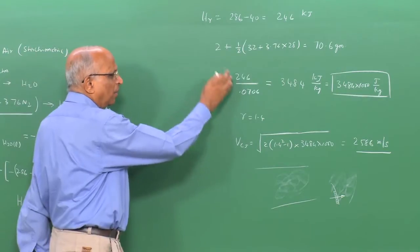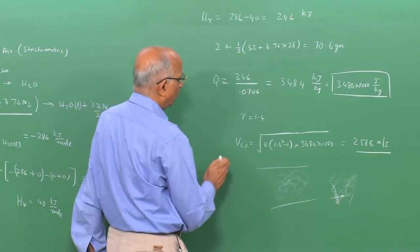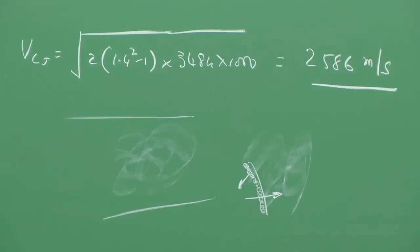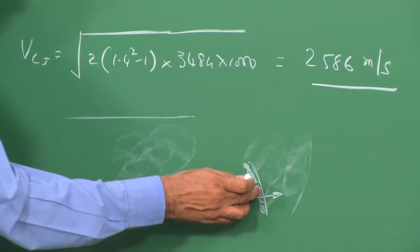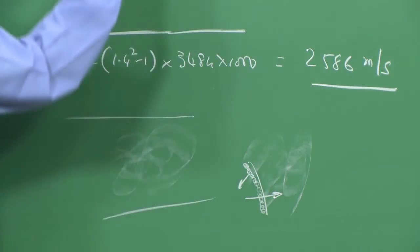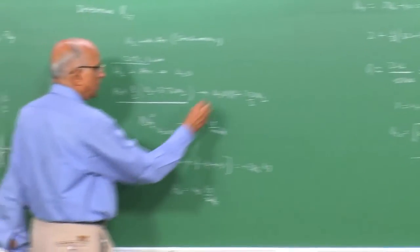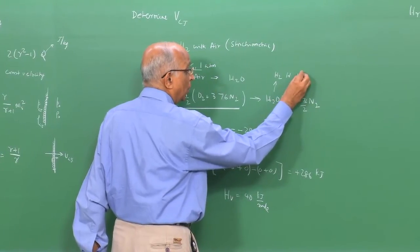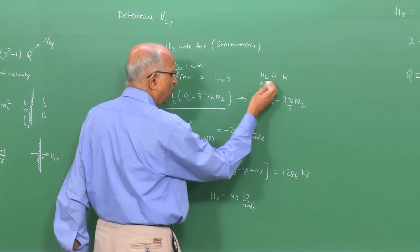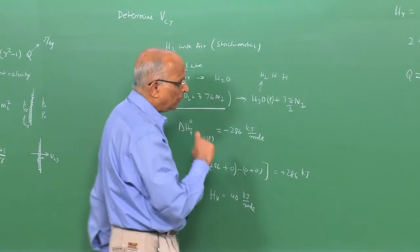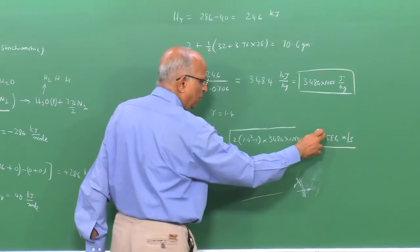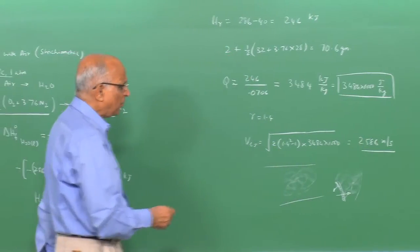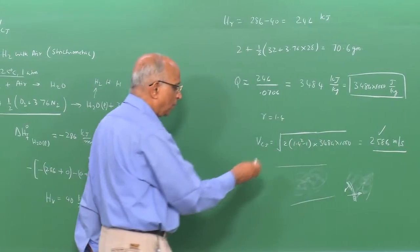However, we must remember the procedure was somewhat simple and crude. We assumed complete combustion, but at high temperatures behind a detonation, water can dissociate back into H₂ and O, and further dissociation can occur. This means the heat release is overestimated on the high side, and therefore the velocity we predicted using this simplistic model could also be on the high side.